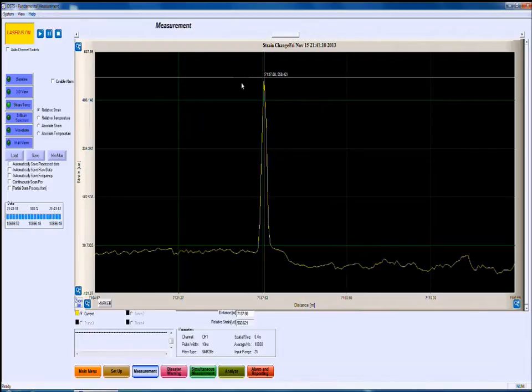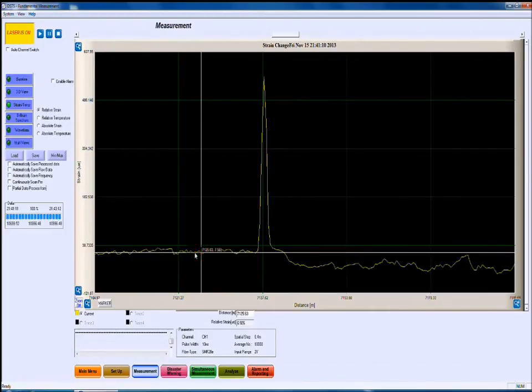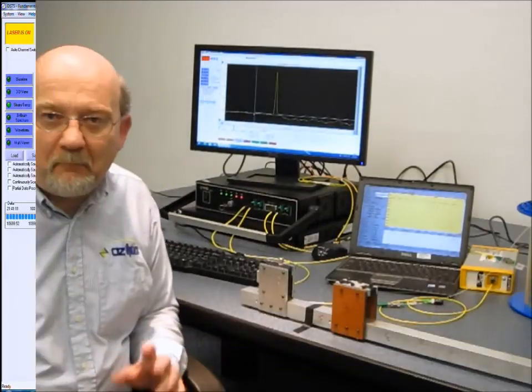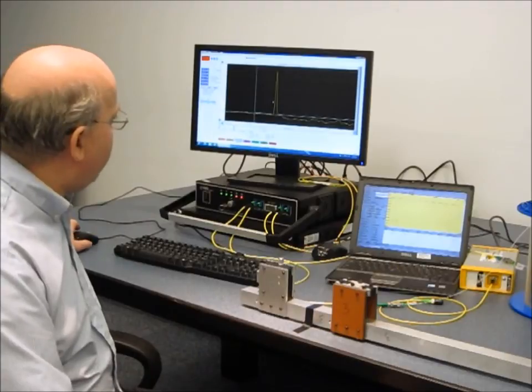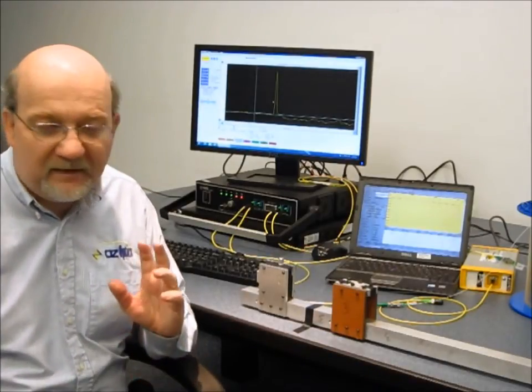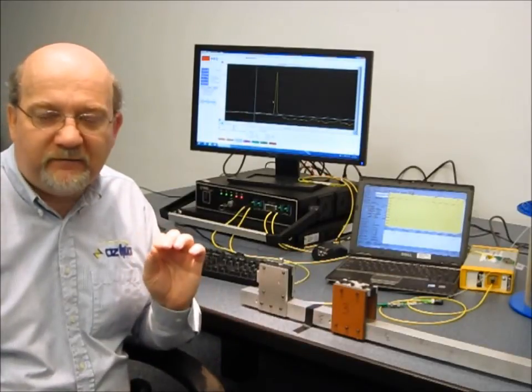The peak here corresponds to a strain of 558 microstrain. For comparison, our background signal is around about 7 microstrain. So our signal that we're seeing here is roughly 70 times stronger than our background signal. So we have a very good signal-to-noise ratio and can easily detect this strain, which was so hard to see using the OTDR system.